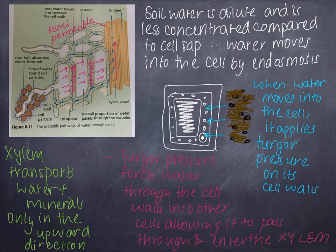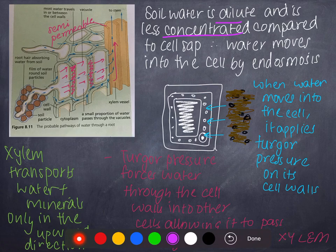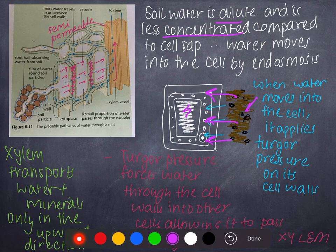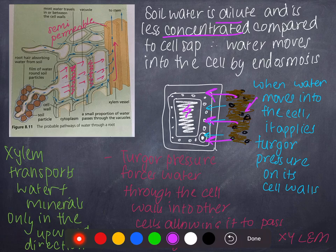Now the main part of this chapter is how water and mineral salts pass from the roots to the xylem. Soil water is more dilute, meaning soil water has more water compared to the cell sap of the actual plant cell. Hence, water moves into the cell by endosmosis, and that makes the cell very turgid or swelled up.